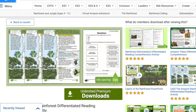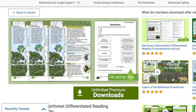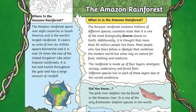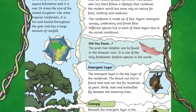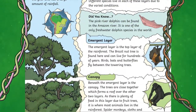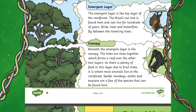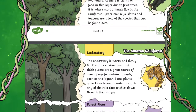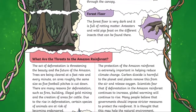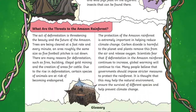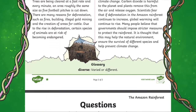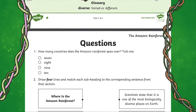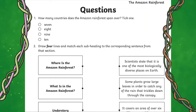Finally, let's take a look at the Upper Key Stage 2 Amazon Rainforest Differentiated Reading Comprehension Activity. This is brilliant to teach your Upper Key Stage 2 pupils about the Amazon rainforest in English or as a reading lesson. Find out how the rainforest is structured.